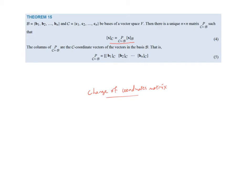The columns of the change matrix are the c coordinate vectors of the vectors in basis b — so b1 relative to c, and b2 relative to c. I need to know one basis in terms of the other to write out that matrix.